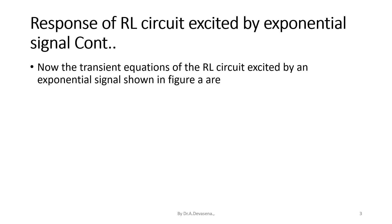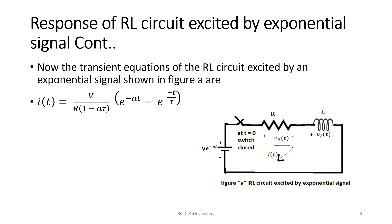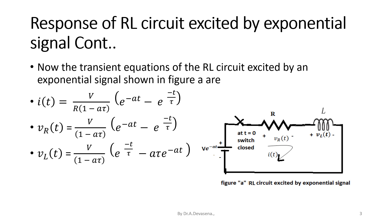The transient equations of the RL circuit excited by an exponential signal shown in Figure A are: I(t) = V/R · 1/(1 − aτ) · [e^(−at) − e^(−t/τ)], V_R(t) = V/(1 − aτ) · [e^(−at) − e^(−t/τ)], and V_L(t) = V/(1 − aτ) · [e^(−t/τ) − aτ·e^(−at)].